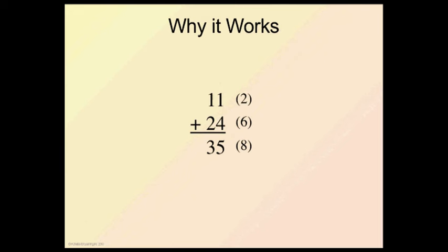Let me show you first why it works. If I take that 11, what I'm actually doing is I'm dividing it by 9. 11 by 9 is 1 with the remainder of 2, which is my check digit. Let's look at 24. 24 divided by 9 is 2 with the remainder of 6, which of course is my check digit. 35 divided by 9 is 3 remainder 8. So this is why it works.